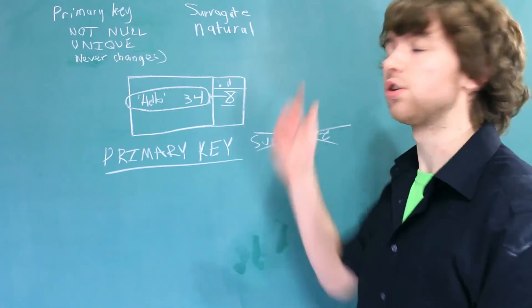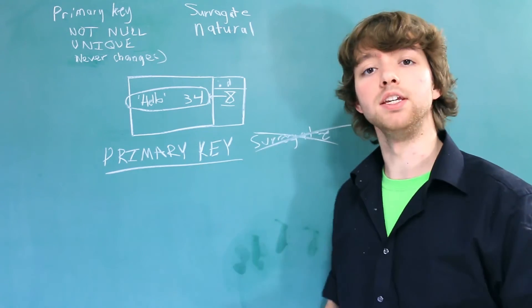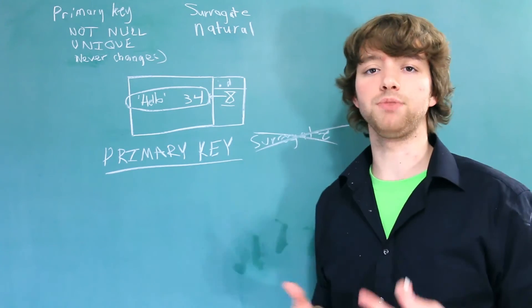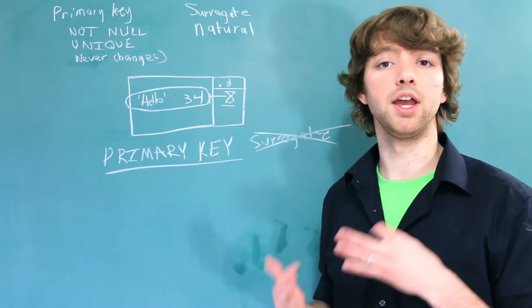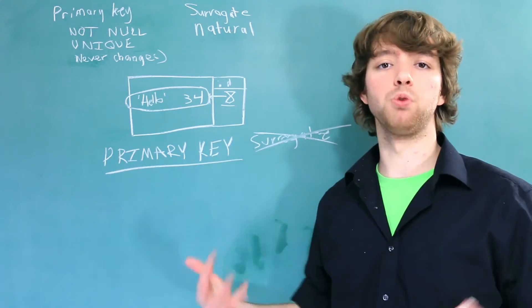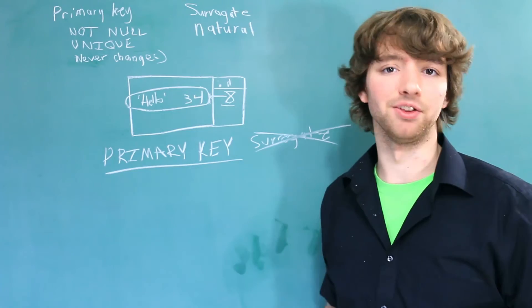So to summarize, surrogate keys are almost always IDs. Natural keys are something that can uniquely identify a row but have real world meaning, for example, an email address.